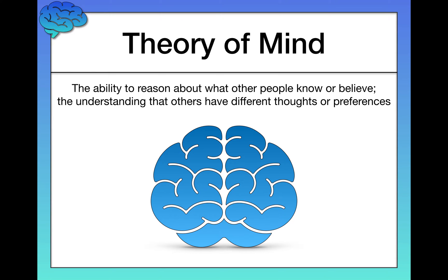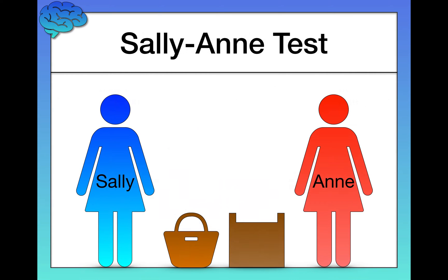The way we traditionally test Theory of Mind in children is by using false belief tasks, where we essentially assess whether a child understands that other people can hold a false belief even when they know what the true reality of the world is. Let me give you one example of a very famous false belief task known as the Sally Ann Test.